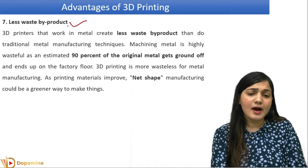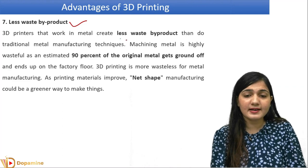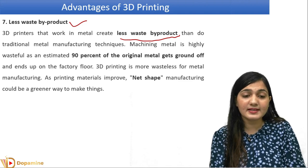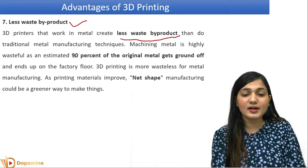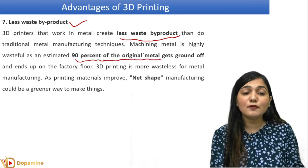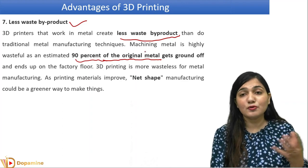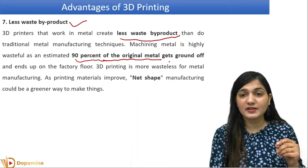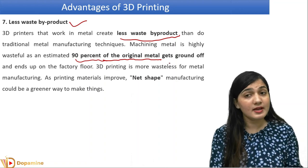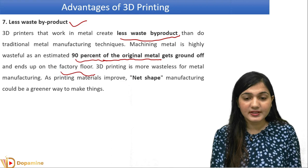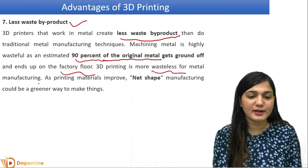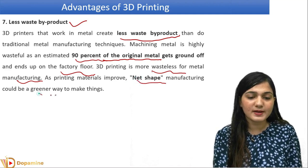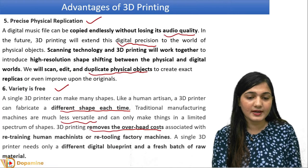There is less waste product in 3D printing. Additive manufacturing creates less waste by-product compared to traditional manufacturing. Machining metal is highly wasteful — around 90% of the original metal is ground off. If you have to make a jewelry piece with a precious metal like gold, you will waste a lot of gold during subtractive manufacturing on the factory floor. 3D printing is much more waste-less for metal manufacturing; it could be a greener way to make things.